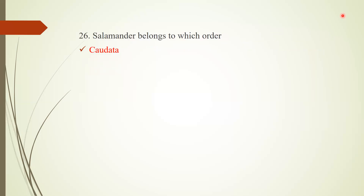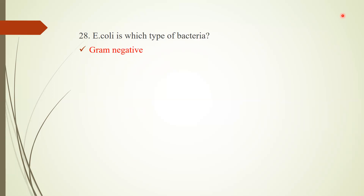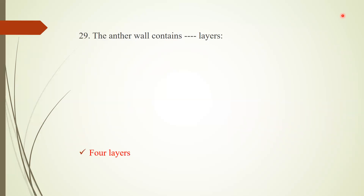Question 26: Salamander belongs to which order? Answer: order Caudata. Question 27: Total ATP produced during glycolysis of one glucose? Answer: four. Question 28: E. coli is which type of bacteria? Answer: E. coli is gram-negative bacteria.